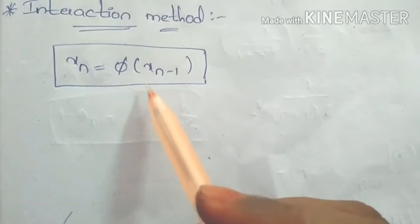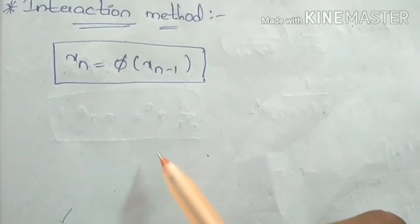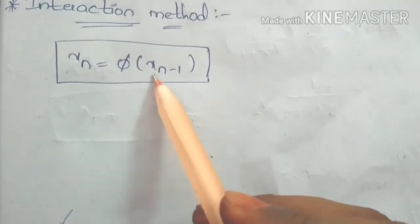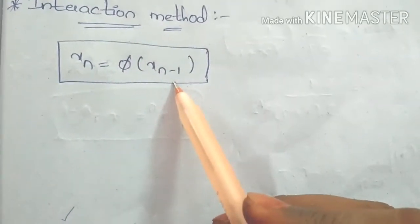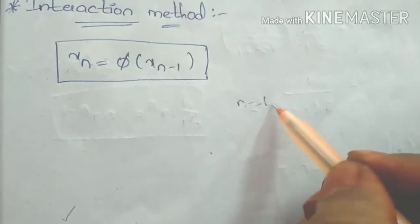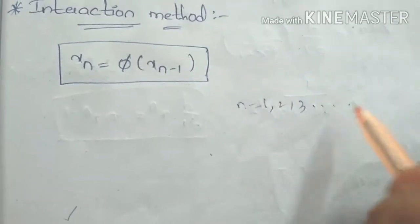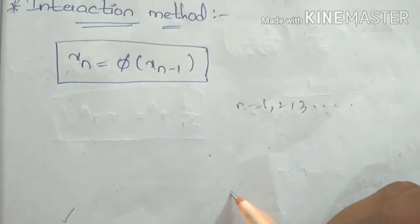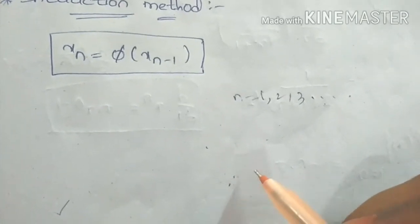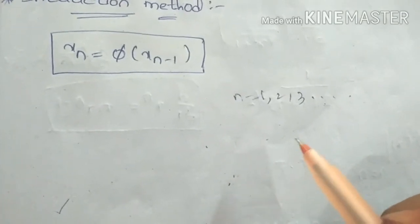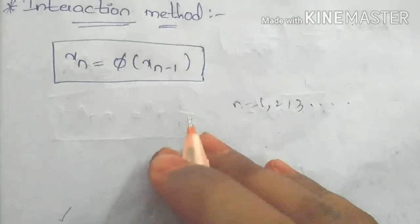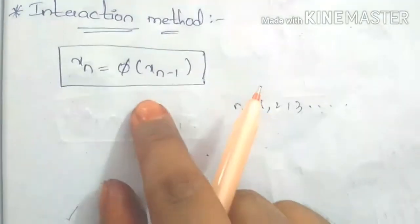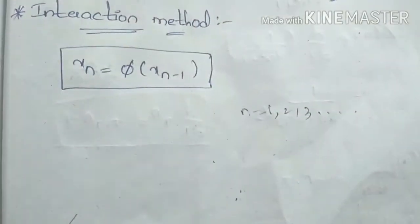If roots are approximated here, we can apply xn equals phi of xn minus 1, where n equals 1, 2, 3. If we substitute the roots here, the roots are equal to the same decimal point — 2 or 3 values are the same — and we can find the approximate root. So this is the formula. Now we have a problem.